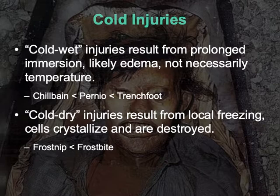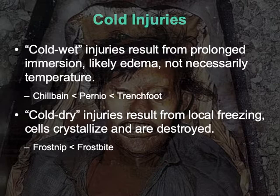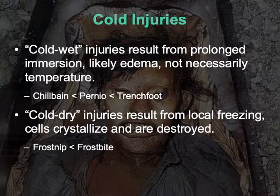Frostbite is a deeper version of frostnip. Skin cells, underlying basement membranes, smooth muscle cells, and the vasculature can all be susceptible to freezing and bursting, creating a portal into the body where bacteria and viruses can enter. There is a large risk of infection requiring amputation. Skin dies — you see it colored purple. There is never a return of sensation, and sometimes the whole limb has to be removed. It's a very severe version of frostnip.